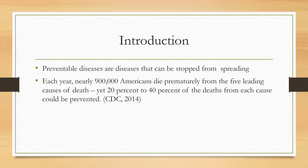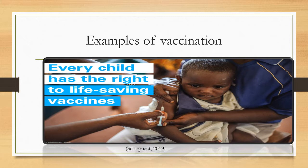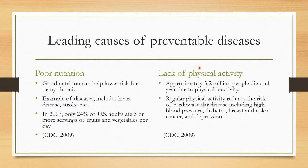Nearly 900,000 Americans died prematurely from five leading causes of death. Studies show that 20 to 40 percent of deaths from those causes could be prevented. This chart shows an example of how vaccination can help address this, even though people are still dying.